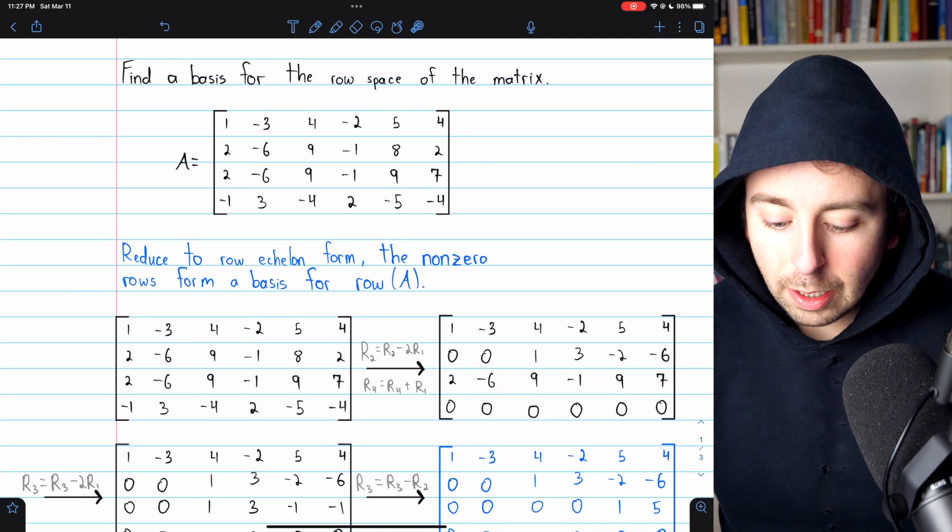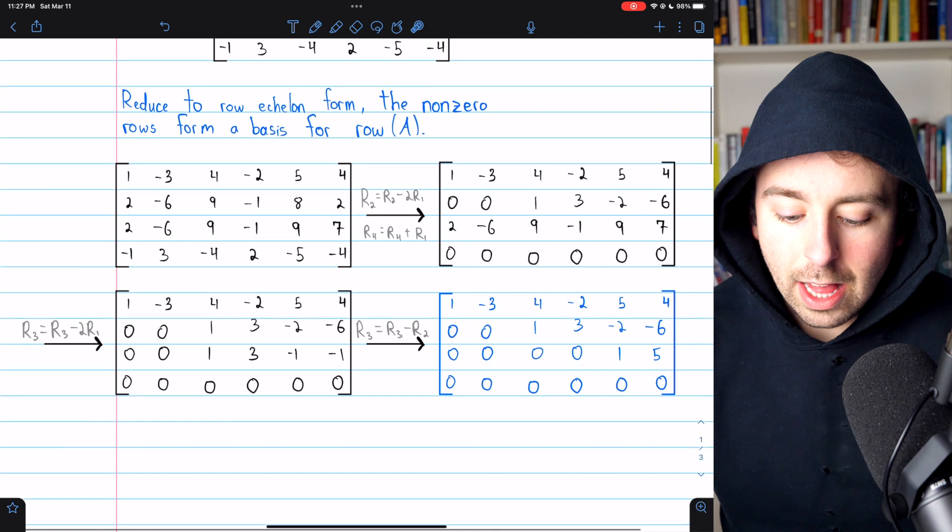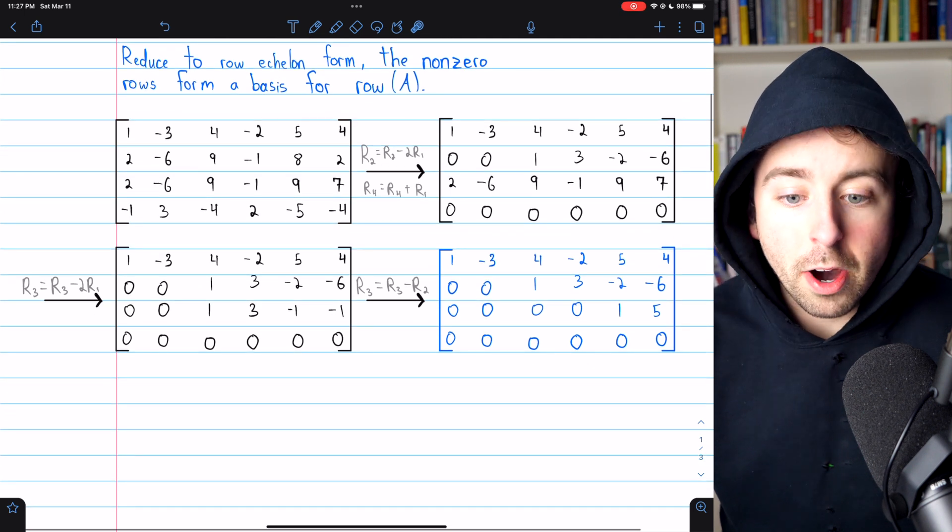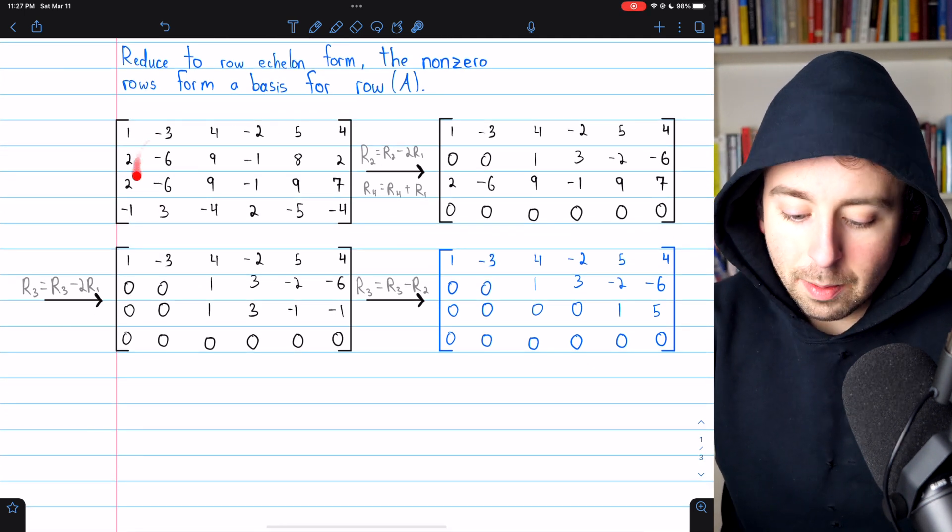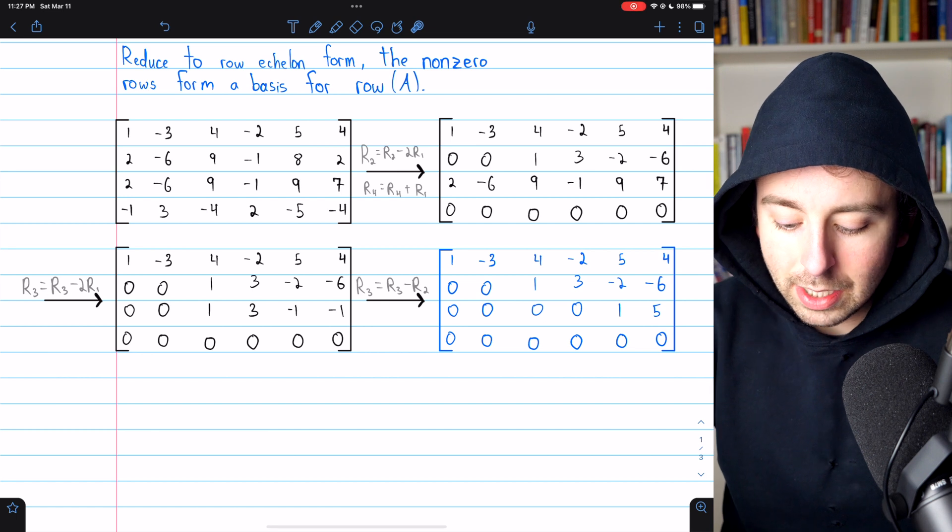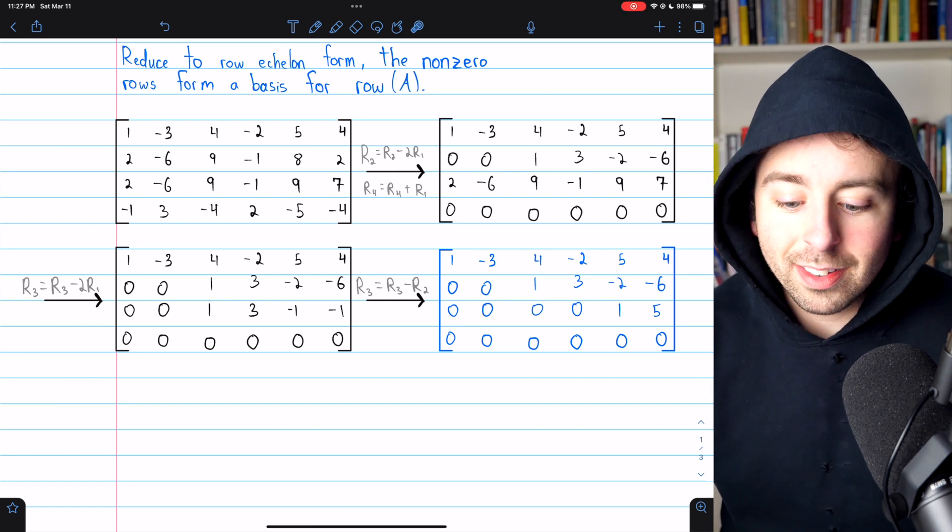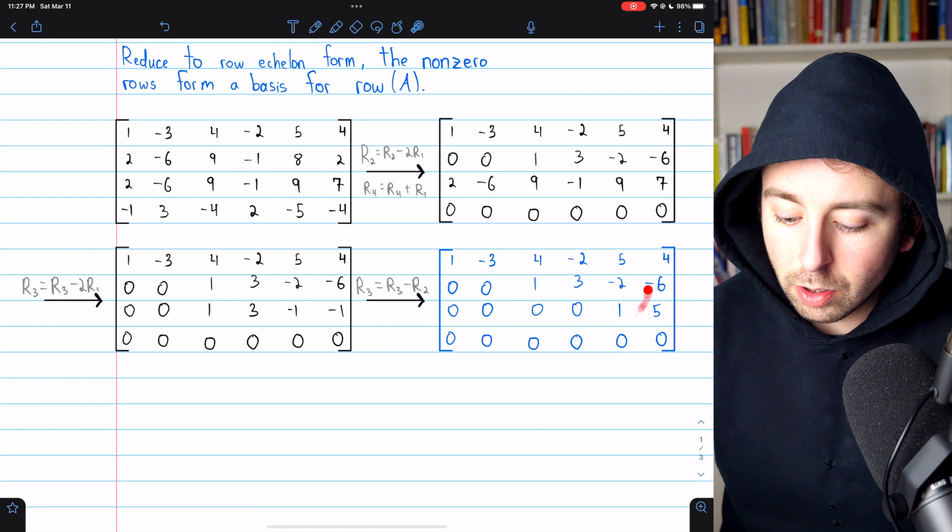I won't explain these elementary row operations in detail because you should be pretty familiar with the process, but this is the beginning matrix A, and then here are the steps we take, the elementary row operations, to get it in row echelon form.